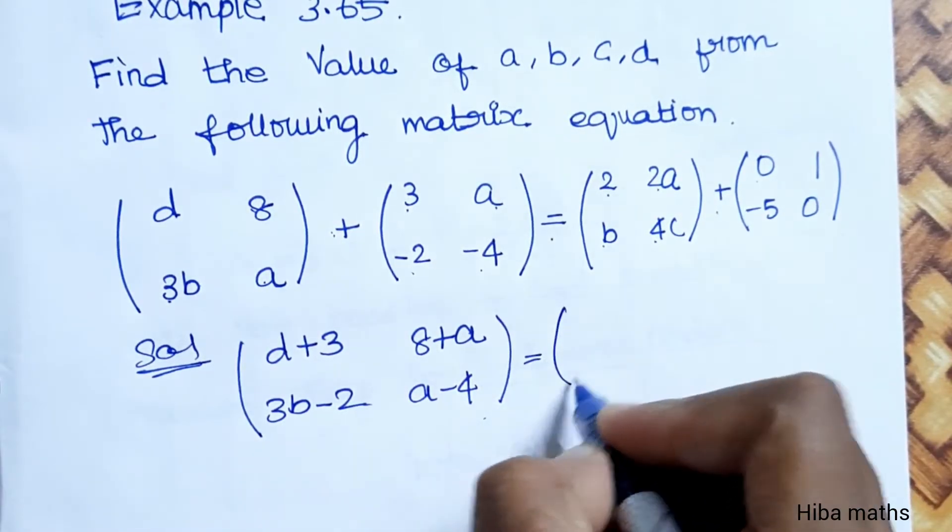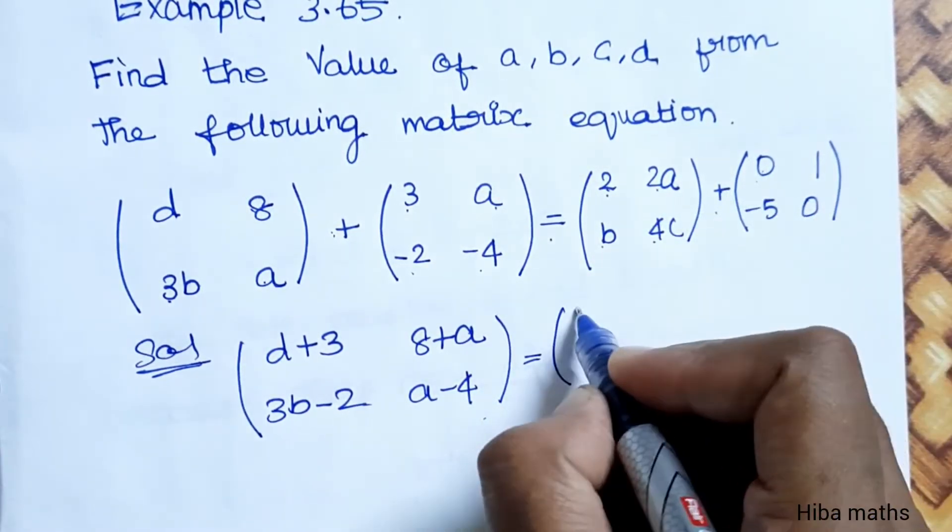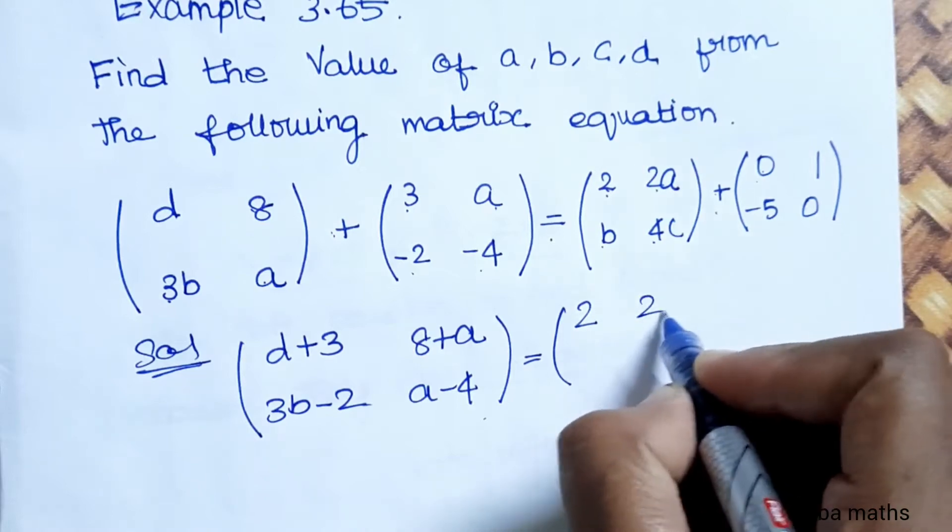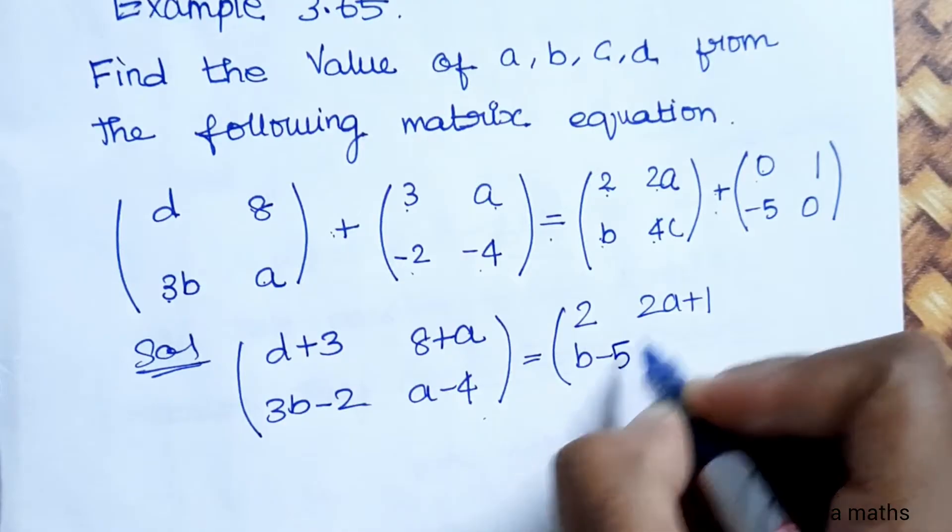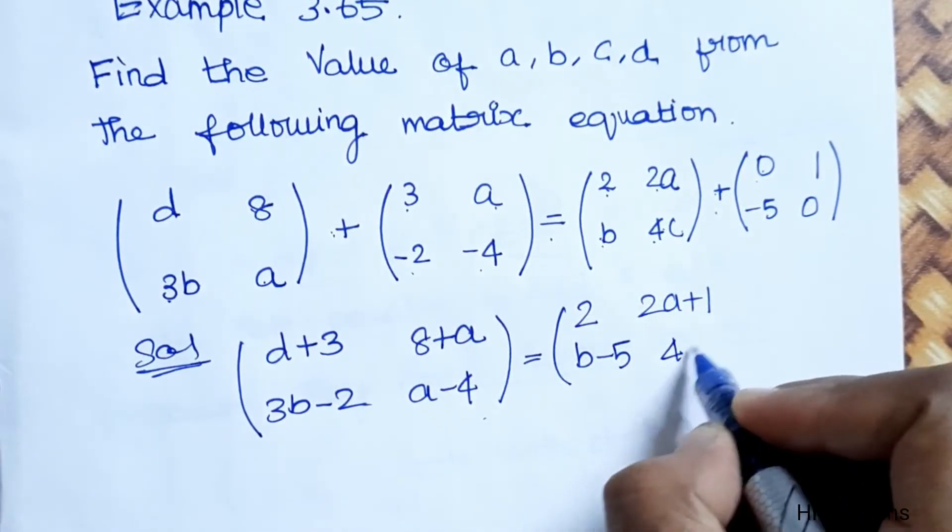That is equal to 2 plus 0 which is 2, 2A plus 1, B plus into minus minus 5, 4C plus 0 which is 4C.